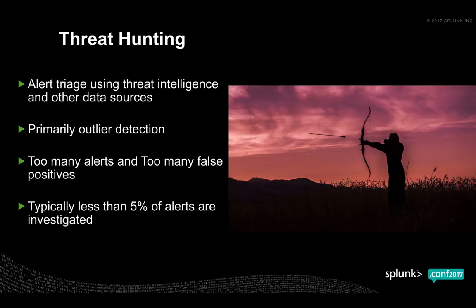Typically, threat hunting starts with alert triage using threat intelligence and other data sources like IDS, IPS logs, firewall logs, Windows authentication logs, endpoint logs, or Bro logs. The threat analyst starts with a hypothesis — for example, wanting to find suspicious processes in a Windows operating system, starting with Windows endpoint and process logs.